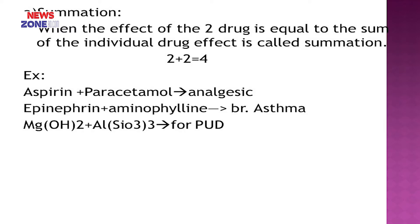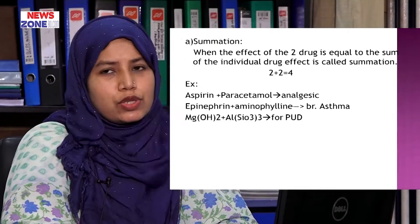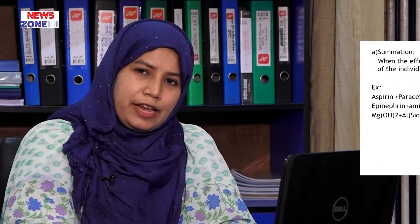Similarly, epinephrine and aminophylline are both used in bronchial asthma and they cause bronchodilation by different mechanisms, but when used together their action is an additive effect. Another example is magnesium hydroxide and aluminium trisilicate — both are used in peptic ulcer disease. Magnesium causes diarrhea and aluminium causes constipation, but when used individually they relieve the peptic ulcer problem, and when used together they also minimize the adverse effects.